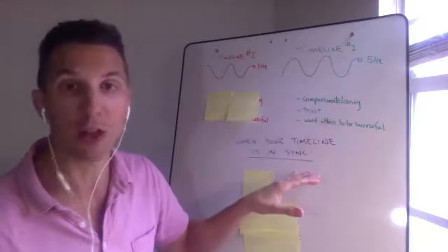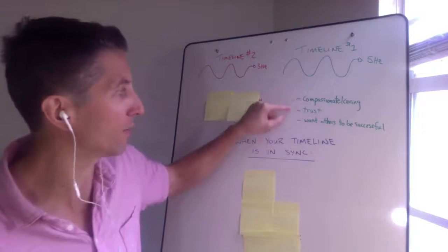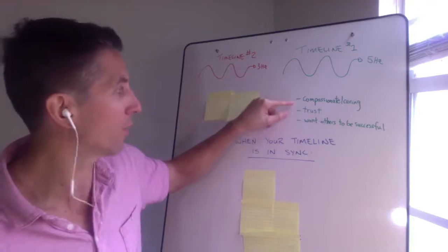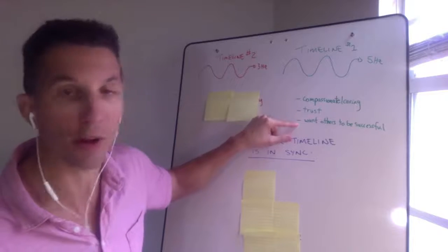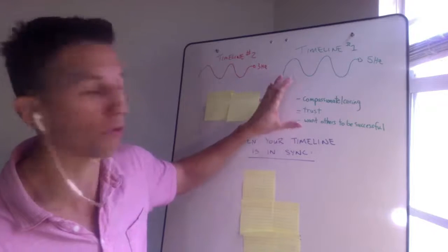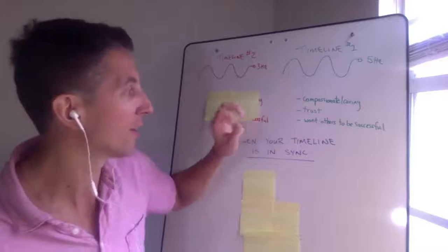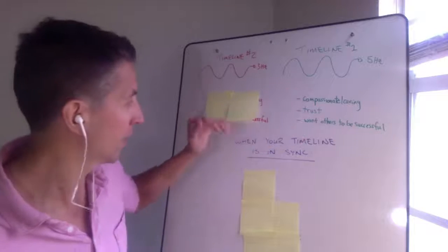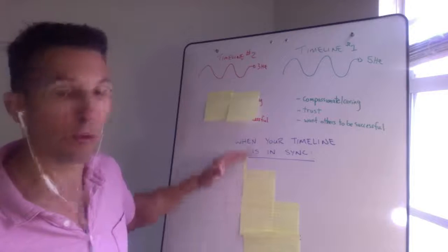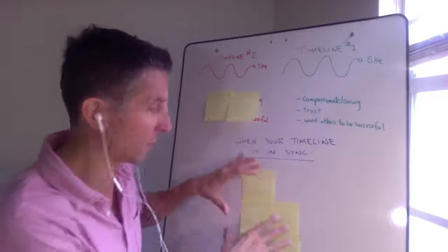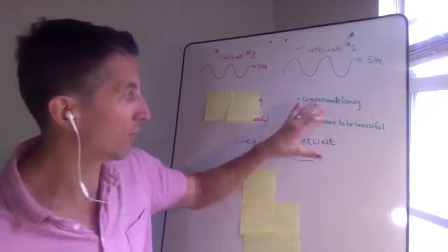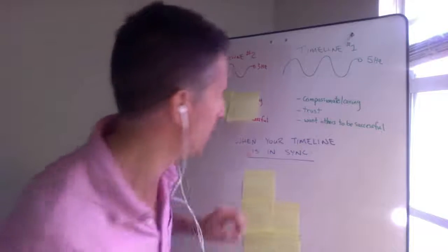And I want others to be generally successful. I want that for them. That's the timeline, that's how I vibrate. These are my best clients, by the way, because they want all these things for their clients. They're compassionate, caring, they trust, they have trust with them and they want others to be successful. That's what's most important to my clients, that's what's most important to me when I work with someone like this and I'm in sync with them.